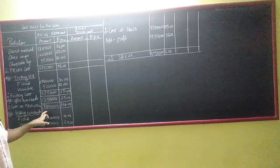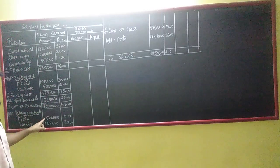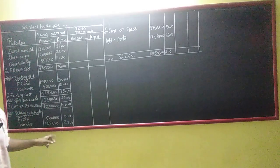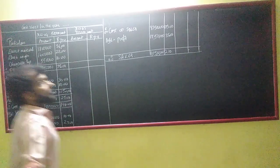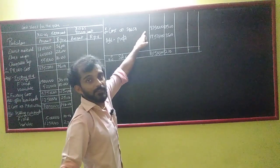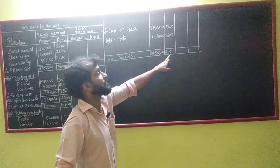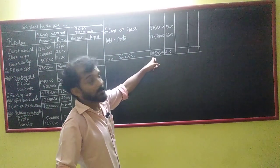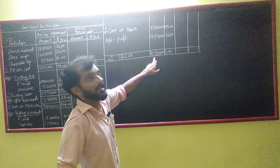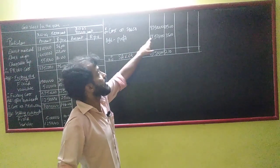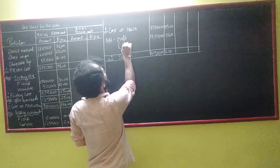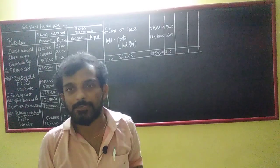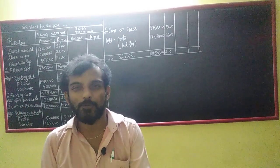Cost of production: 70 lakhs. Selling expenses: fixed 5 lakhs and variable 25 per unit into 50,000 will be added. Cost of sales is 87.50 lakhs. Selling price: Rs. 210 into 50,000 units gives sales of 1.05 crores. So 87.50 lakhs cost against sales gives us the profit. I hope the first year is clear — simple.